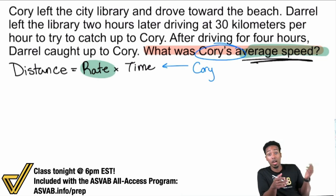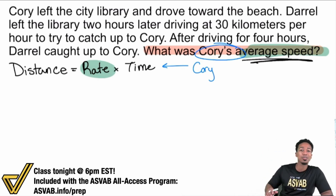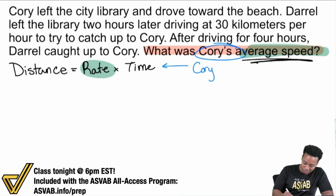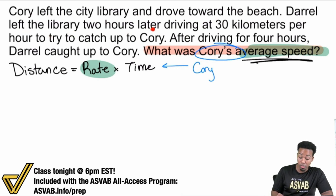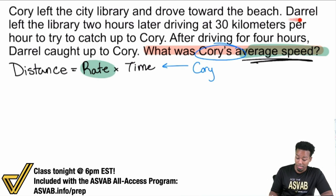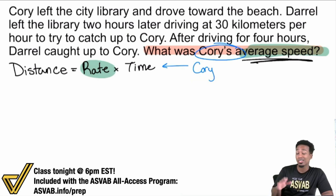It's like saying: our job is to put up this painting, so let's see what tools we have. Let's start with the information. Corey left the city library and drove toward the beach — no real hard numbers there, that's giving us context. Daryl left the library two hours later, driving at 30 kilometers per hour to try to catch up to Corey. That information is for Daryl, not Corey, so let's write it and mark it as Daryl's.